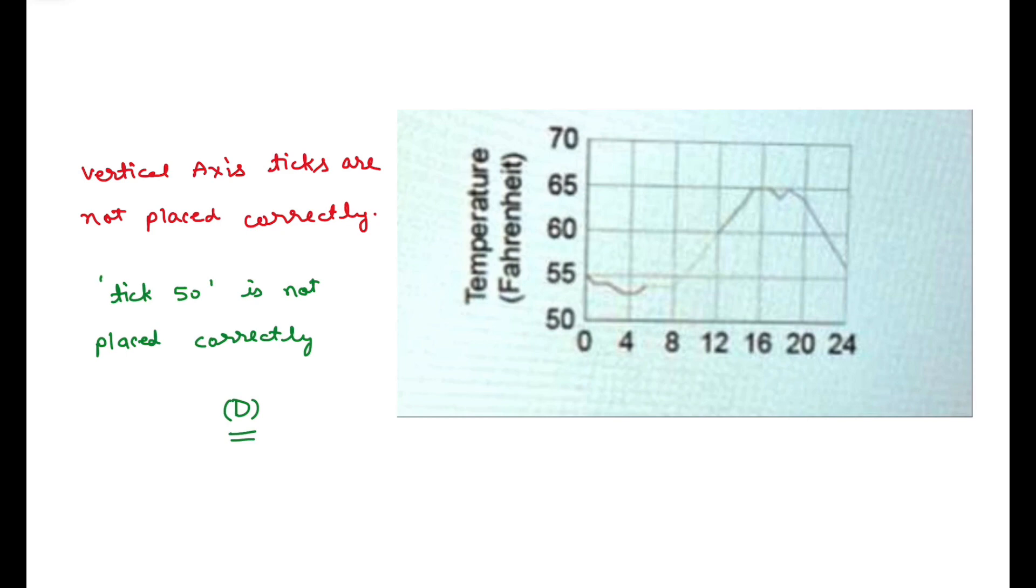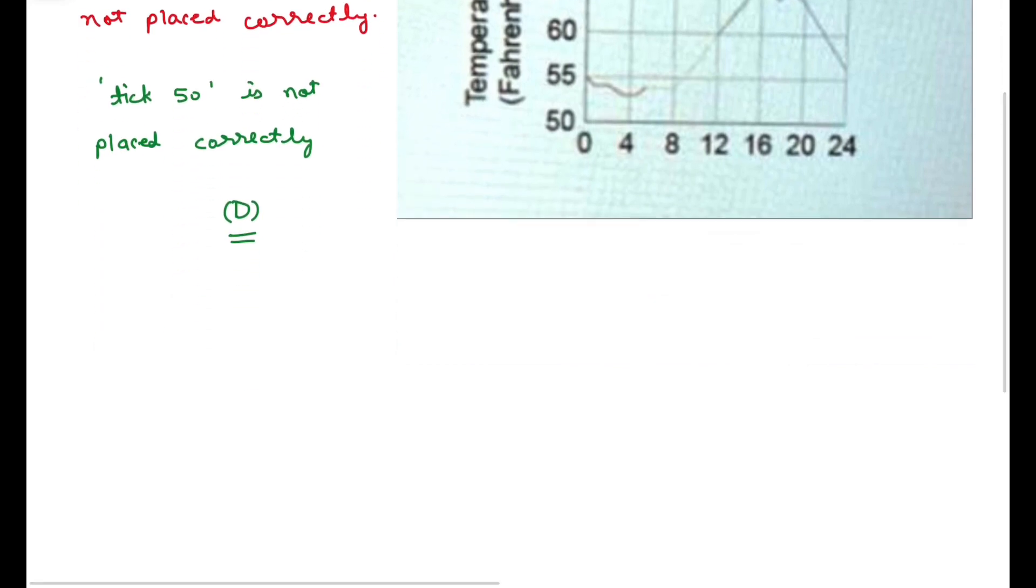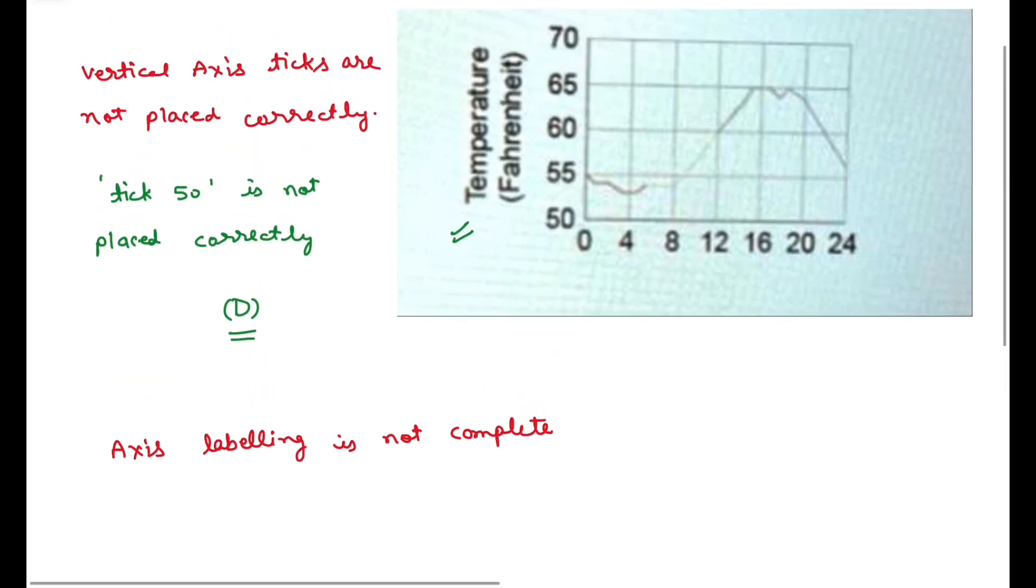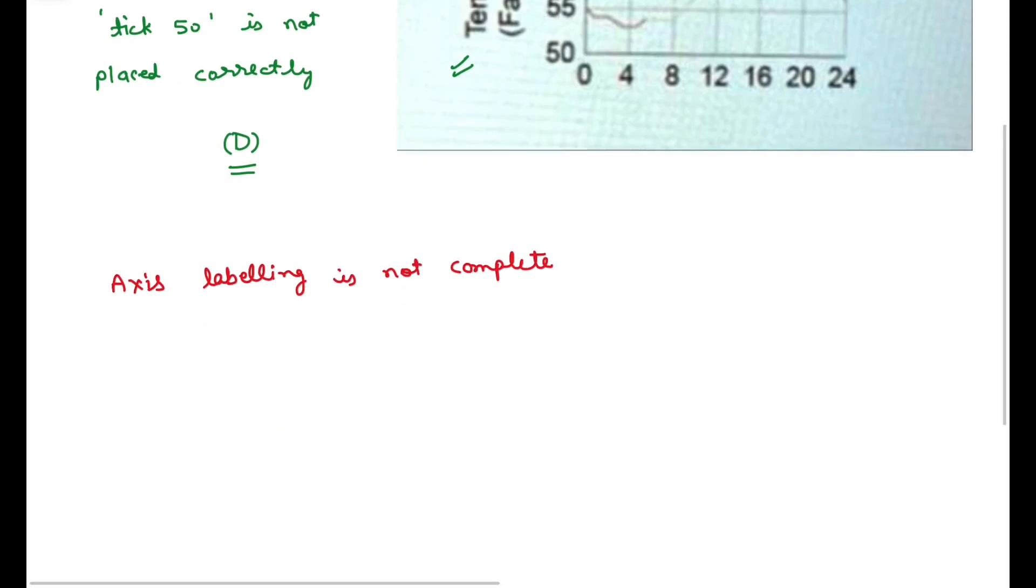Now we see that axis labeling is not complete. On the y-axis we know that this is temperature, but on the x-axis we don't know anything. The x-axis information is not given.